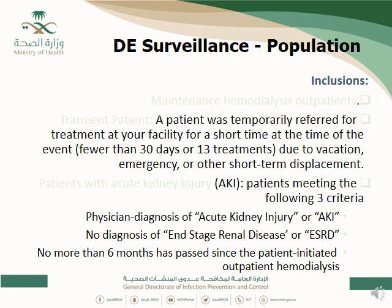We also include transient patients — those temporarily referred to your center for a short duration, usually less than a month, for reasons such as vacation, emergency, or short-term displacement. Transient patients should be included in the denominator when collected in the first two working days, and in the numerator if they develop an event. They are treated exactly like maintenance hemodialysis patients. Conversely, if your own patients go transiently to an outside center, you do not include them.